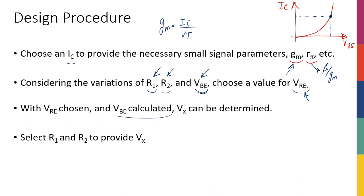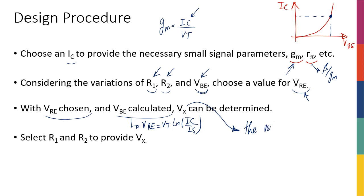With VRE chosen and VBE calculated — because we can calculate VBE from the exponential equation: VBE equals VT times ln(IC / IS) — and since I have IC from gm and I know VT and IS, I have VBE. With a chosen VRE, I can then calculate VX, which is the voltage at the base.